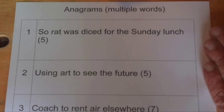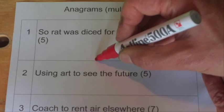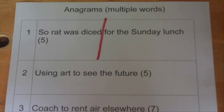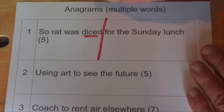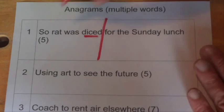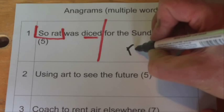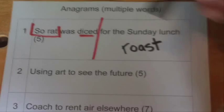With cryptic crosswords you can have many types of clues, but this time we're going to look at anagrams. Usually with a cryptic crossword you can split the clue in the middle. So this top clue is 'so rat was diced for the Sunday lunch.' The clue word here is 'diced' — with an anagram you're going to have some sort of word that means to mix up or shake around. We've got a five-letter answer, so if we mix up the letters from 'so rat' to get a word that means Sunday lunch, the answer is ROAST — r-o-a-s-t — which is the same as Sunday lunch and is an anagram of 'so rat.'